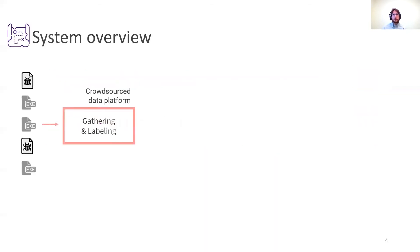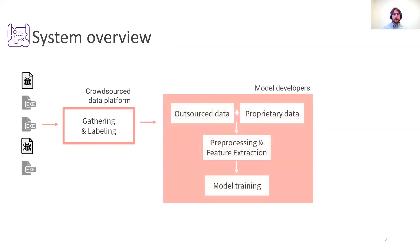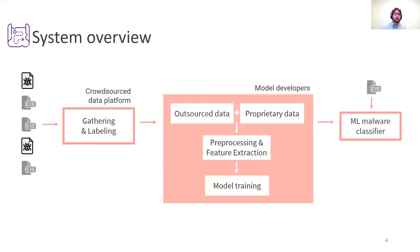Let's start by taking a bird's eye view at a simplified training pipeline for a malware classifier. Crowdsourced threat feeds aggregate large numbers of binaries obtained by allowing any external user to submit files to their servers, where they are scanned by a host of different antivirus engines which produce a set of labels. This data is then acquired by model developers who may augment it with proprietary resources, and the resulting dataset is pre-processed to extract the feature vectors used to train the model. The resulting model is then deployed on endpoints to correctly distinguish between benign and malicious software.